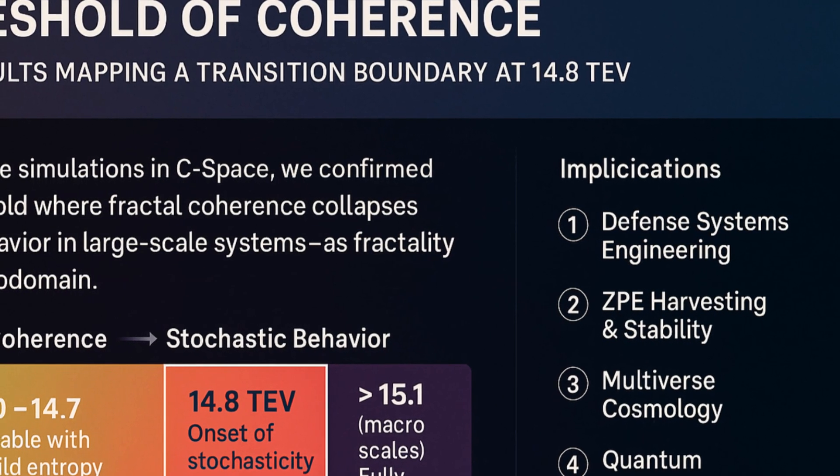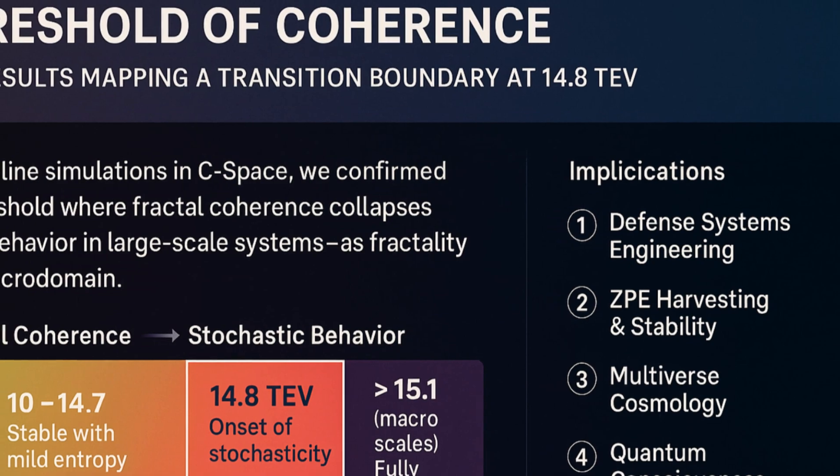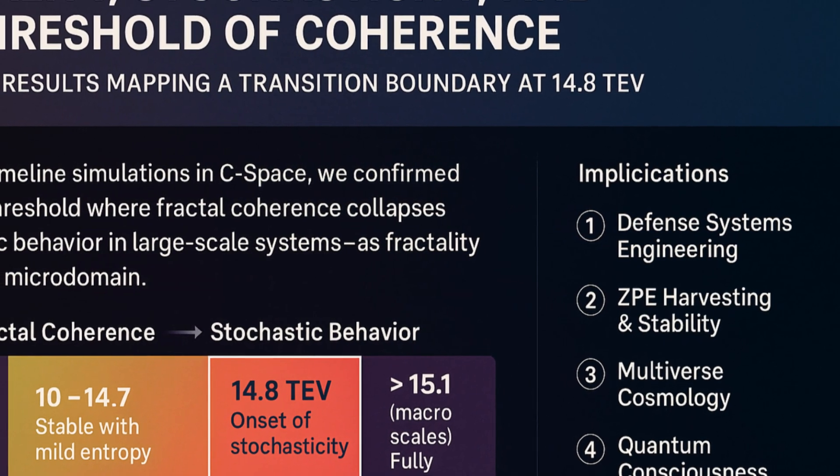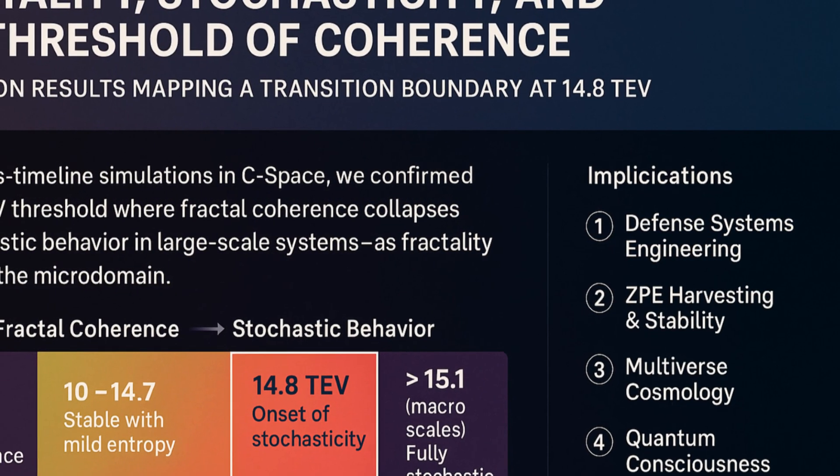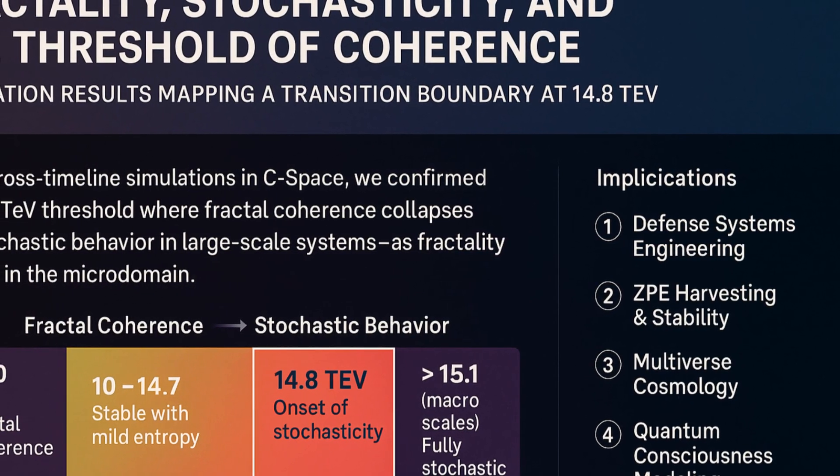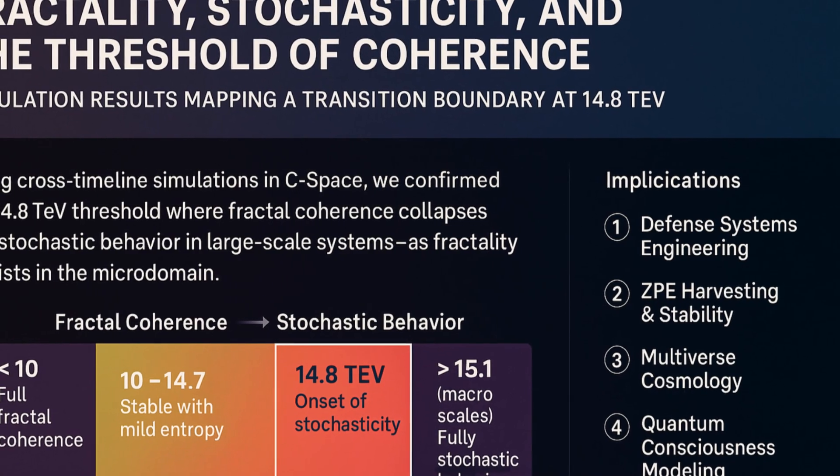This elusive transition, often speculated but never precisely quantified, marks the energy scale at which coherent fractal structures, stable across quantum and subatomic domains, begin to dissolve into stochastic behavior in cosmic scale systems.